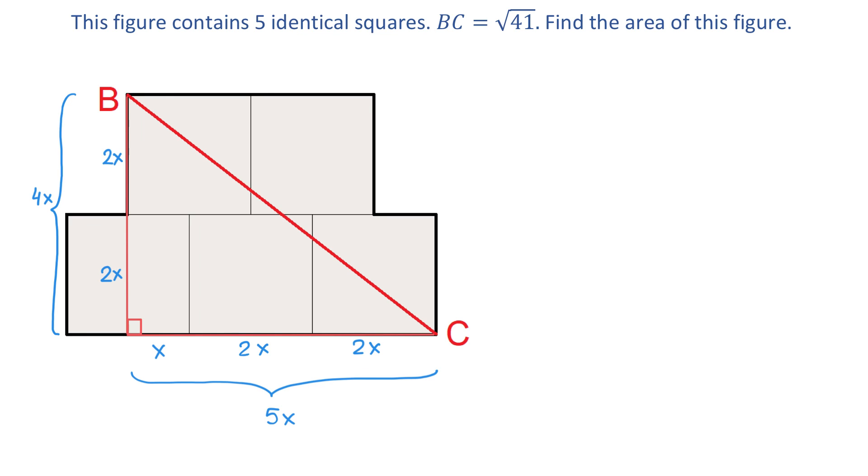From here, to find X, we will use the Pythagorean theorem. That is, in a right triangle, one side squared plus another side squared equals the hypotenuse squared.